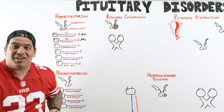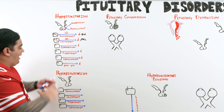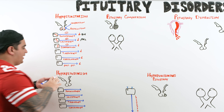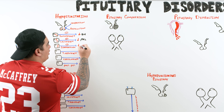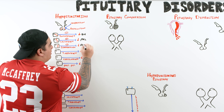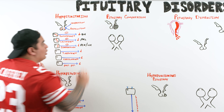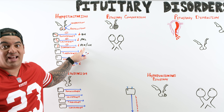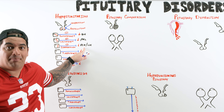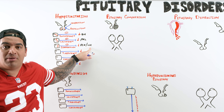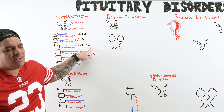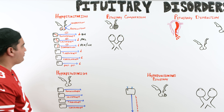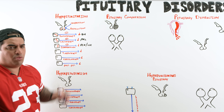If the lactotrophs are damaged, they lose the ability to produce prolactin, leading to lactation failure. If the gonadotrophs are damaged, they lose the ability to release FSH (follicle stimulating hormone) and LH (luteinizing hormone), which are important for spermatogenesis, ovulatory and menstrual cycles, testosterone production, and progesterone production.